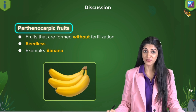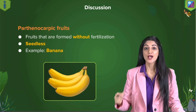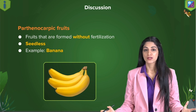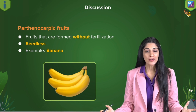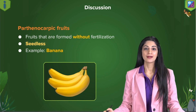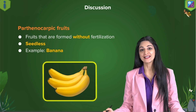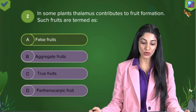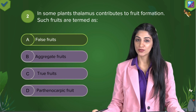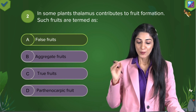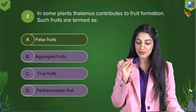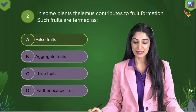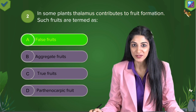Parthenocarpic fruits are the ones which develop without fertilization, so they are definitely seedless fruits. An example is the seedless banana, which is a parthenocarpic fruit. Looking at the question: a fruit in which the thalamus contributes to fruit formation is called a false fruit.